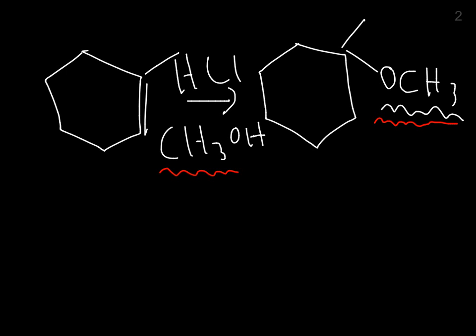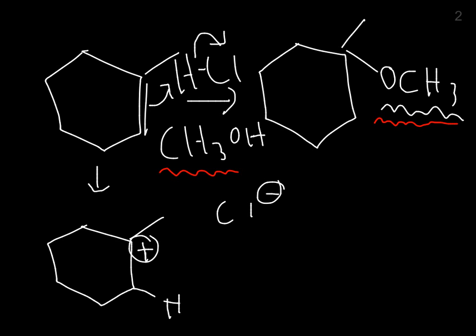Now, remember that this double bond is going to come out, grab that acidic proton, and kick off that chlorine. So what is our intermediate? Well, we get an H right here, and where does our carbocation go? It goes here. But now we have chloride ions in solution, chloride anions, but we also have methanol in solution.